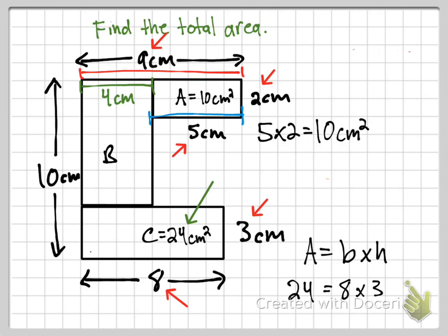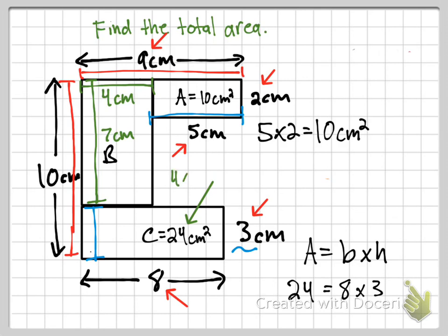Similarly, I can find the height of B. The whole shape measures 10 centimeters tall, and rectangle C measures 3 centimeters, so 10 minus 3 equals 7 centimeters — that's the height of B. Now I multiply 4 times 7, which equals 28 centimeters squared, so the area of B is 28 centimeters squared.